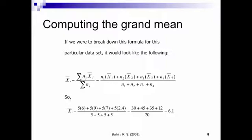So just plug and chug. In group 1 we had a mean of 6 and a group sample size of 5, so 6 times 5. Plus a mean of 9 times 5. Plus a mean of 7 times 5. Plus a mean of 2.4 times 5. We divide by 5 plus 5 plus 5 plus 5, which is 20. So 30 plus 45 plus 35 plus 12 divided by 20 equals 6.1. That's our grand mean.